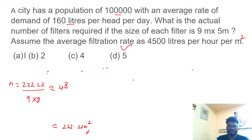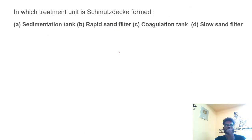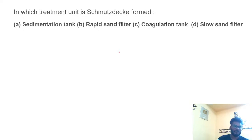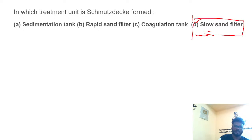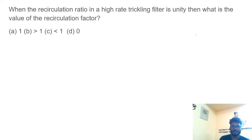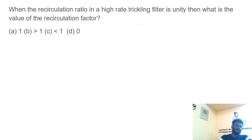In which treatment unit is Schmutzdecke formed? Schmutzdecke is a biological layer formed by microorganisms, and it is formed in a slow sand filter. This is important — Schmutzdecke is formed under the slow sand filter.